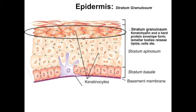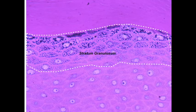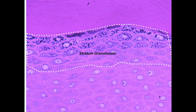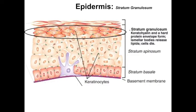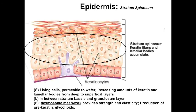The stratum granulosum can be identified by the granular appearance of the cells — they have been accumulating keratin and packets of lipids as they matured from the lower layers. At this point, they may start to release those lipids, which help form part of the waterproof layer. These cells are far removed from the blood supply of the underlying dermis and so are beginning to die. Moving deeper, we find a thicker layer of cells that are still alive, with interstitial fluid between them, but are building up more keratin and lipid bodies.